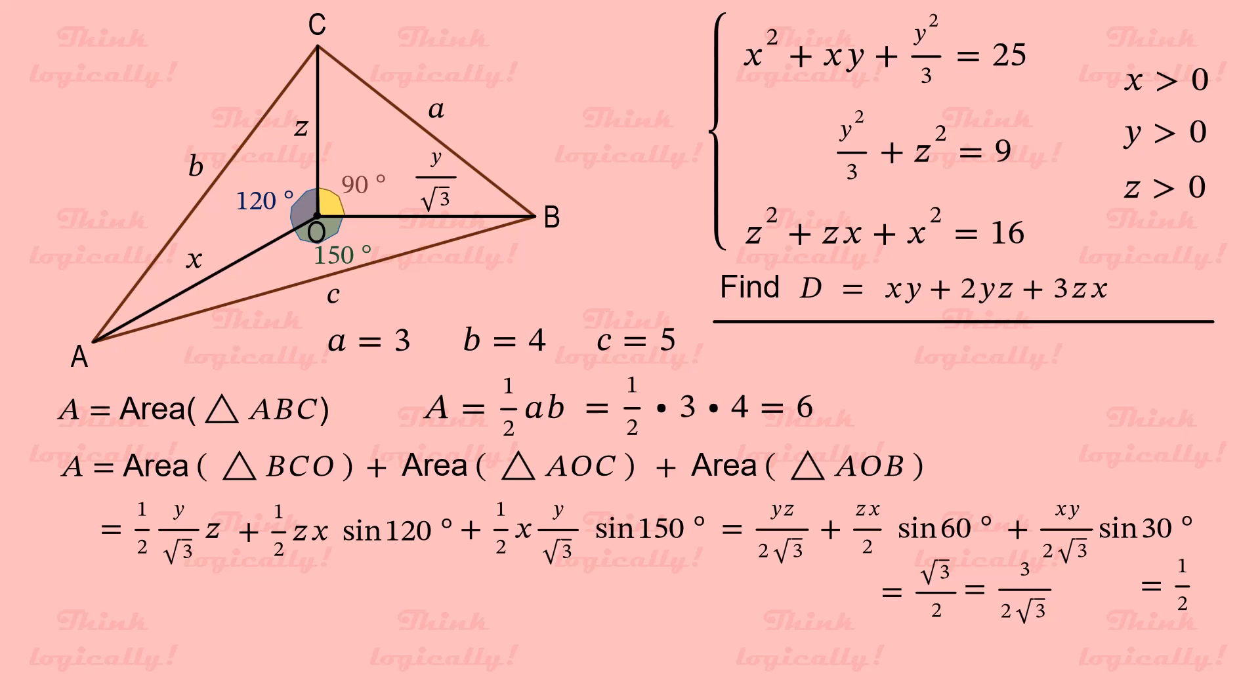And we substitute the values for the sines. Now we factor out 1 over 4 square root of 3. And get in the brackets what we secretly hoped to get. Indeed, this is precisely d. The value we are aiming for. So we write a equals d divided by 4 square root of 3.